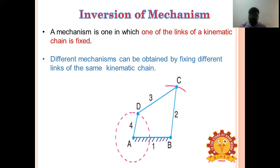The inversion of mechanism: the method of obtaining different mechanisms by fixing different links in a kinematic chain is called inversion of mechanism. For example, a kinematic chain with four links makes four different mechanisms by fixing different links one at a time.